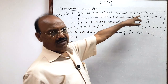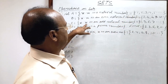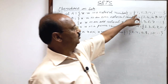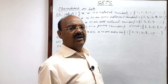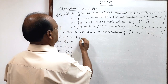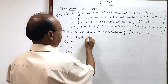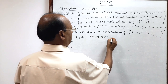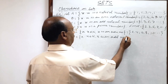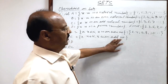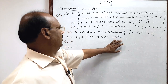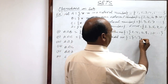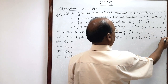A∩C: A is simply the set of all natural numbers and C is the set of odd natural numbers. The common elements of sets A and C are simply the odd natural numbers. So A∩C = {x such that x belongs to the set of natural numbers and x is an odd number}, which consists of elements 1, 3, 5, 7, 9 and so on.